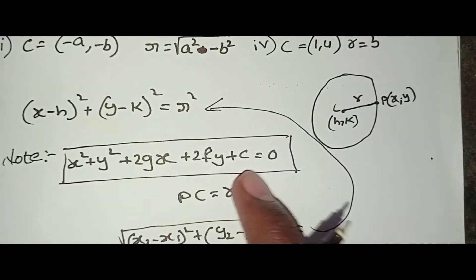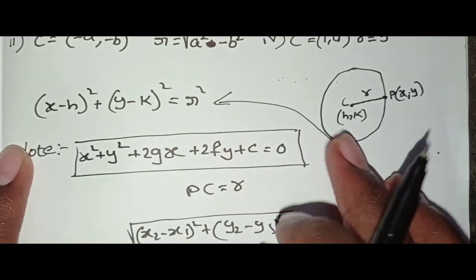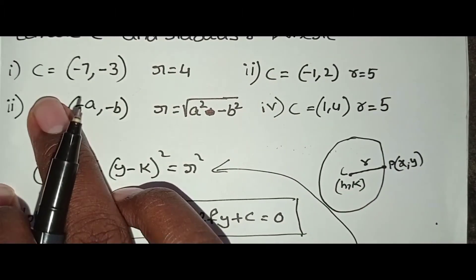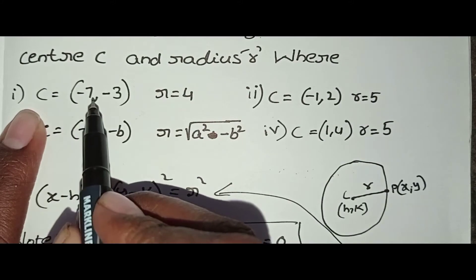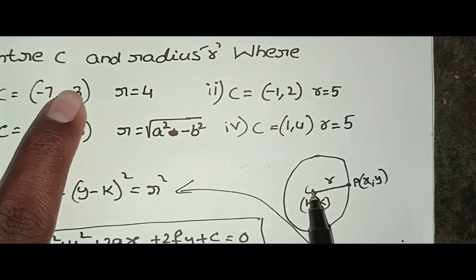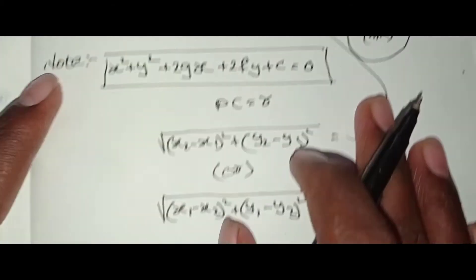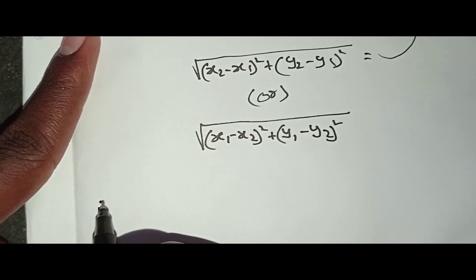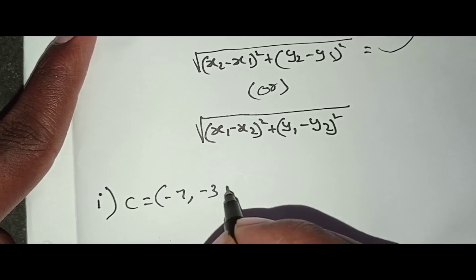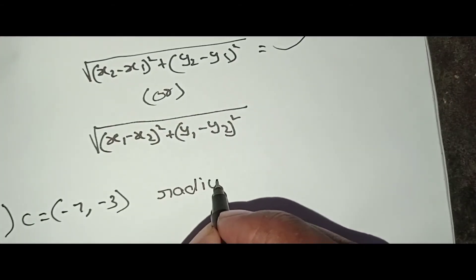Now for the first example: the center is (−7, −3) and the radius is 4. We are given center (−7, −3) and radius r equals 4.